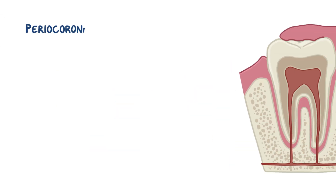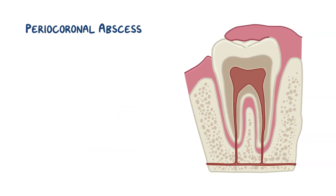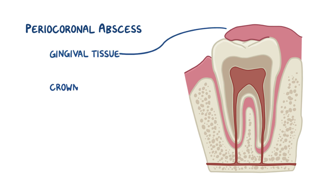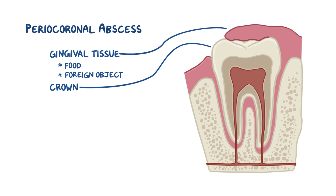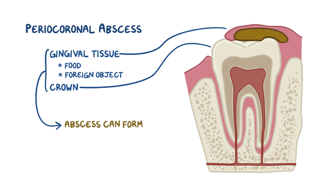Finally, there's a pericoronal abscess, which happens when the tooth does not erupt completely, leaving a flap of gingival tissue over the top of the crown. When food or another foreign object gets deeply trapped between the flap of gingival tissue and the top of the tooth, an abscess can form.